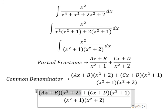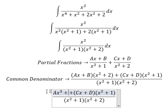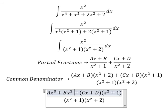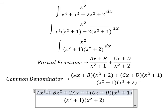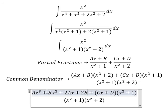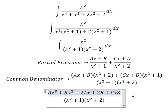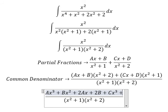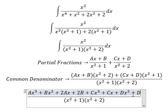Now we need to expand. That gives us Ax to the power of three plus Bx squared plus 2Ax plus 2B for the first term, and Cx to the power of three plus Dx squared plus Cx plus D for the second term.